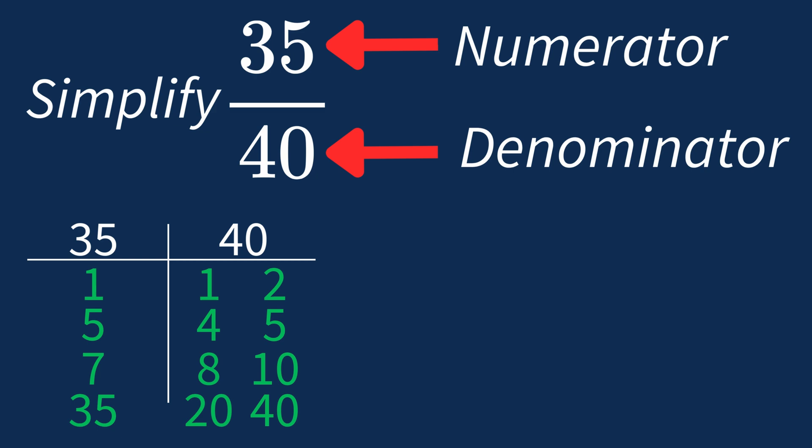So the largest common factor between 35 and 40 is 5. This means we can divide both the numerator and denominator by 5 to simplify the fraction.